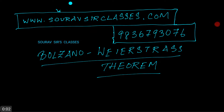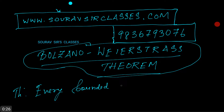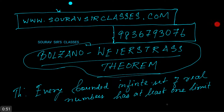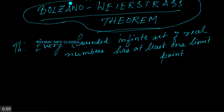Hello and welcome to Shore of Stars Classes. Today we will be doing an advanced topic on sequences called the Bolzano-Weierstrass theorem. The theorem states that every bounded infinite set of real numbers has at least one limit point. I won't be doing the full proof, but I will show you how to remember and understand the proof.